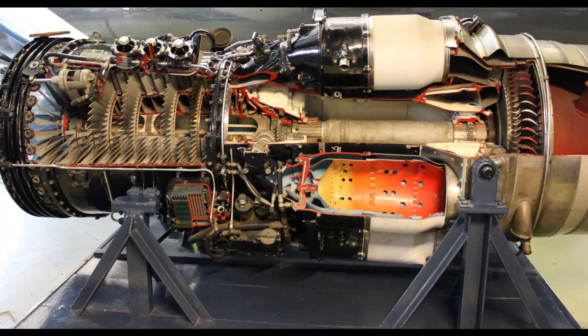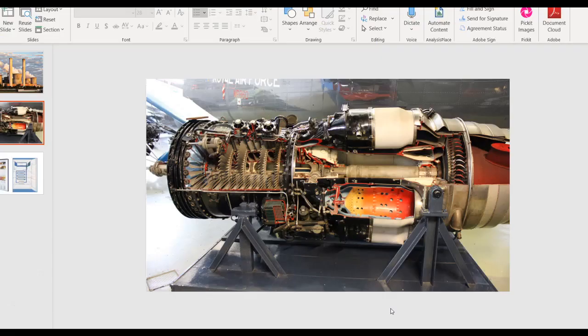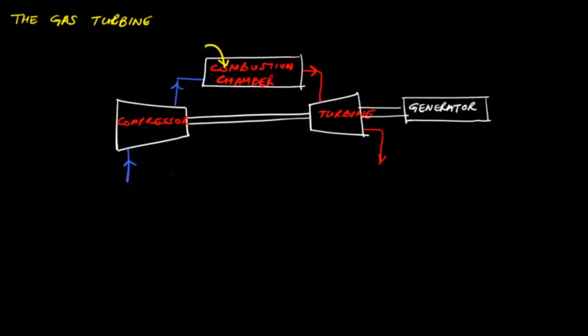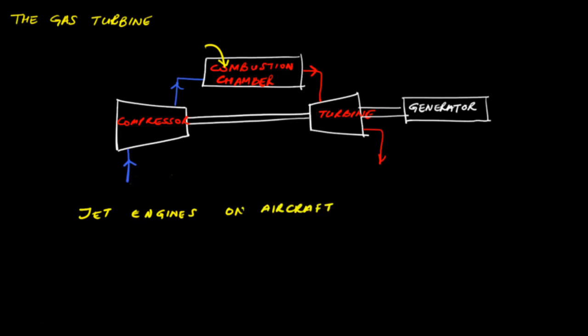The next example is the gas turbine, shown in this picture. Gas turbines are used where large amounts of power are needed but only a small physical size is available. Examples include jet engines on aircraft, ship engines, helicopter engines, and small power plants.